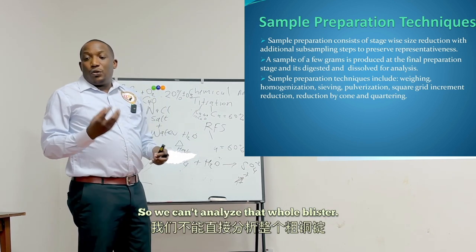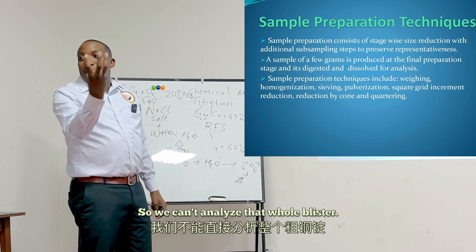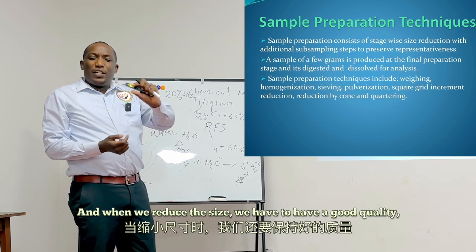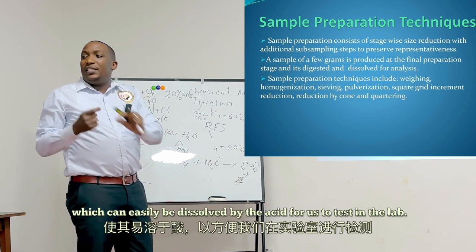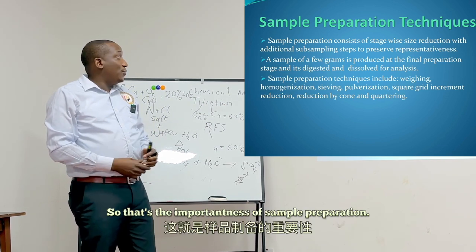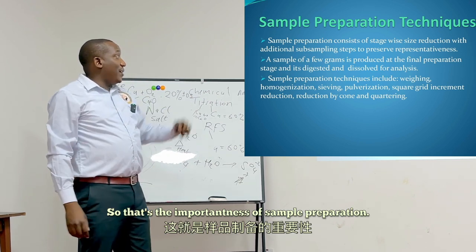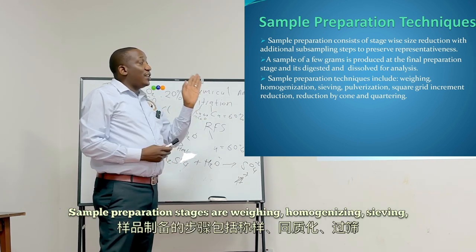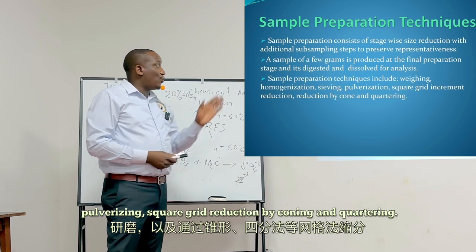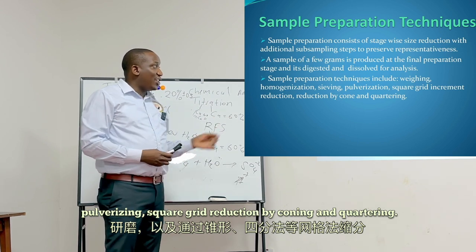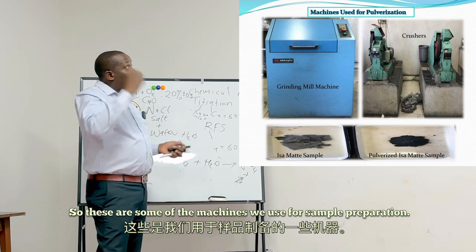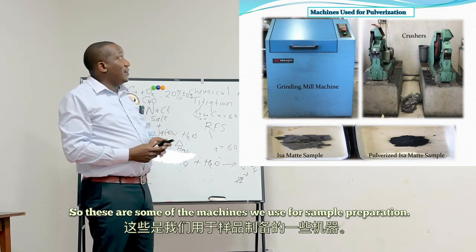We can't analyze an entire blister — we have to reduce it in size, and when we reduce the size, we need good quality material that can easily be dissolved by acid for testing in the lab. Sample preparation stages are: weighing, homogenizing, sieving, pulverizing, square grid reduction by coning and quartering.